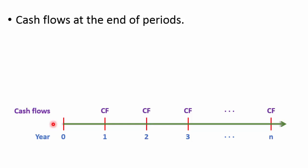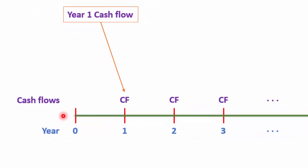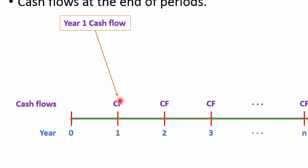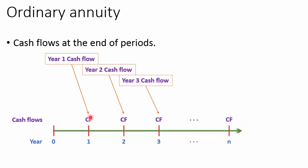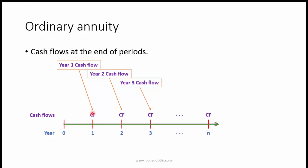The year 1 cash flow is generated at the end of year 1, year 2 cash flow is generated at the end of year 2, year 3 cash flow is generated at the end of year 3, and the last cash flow is the year n cash flow.